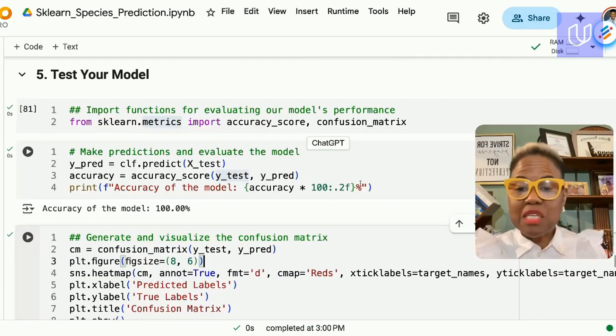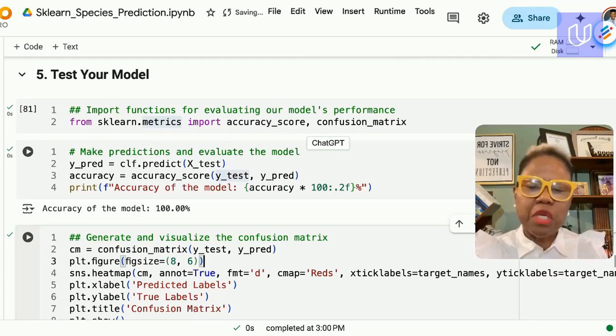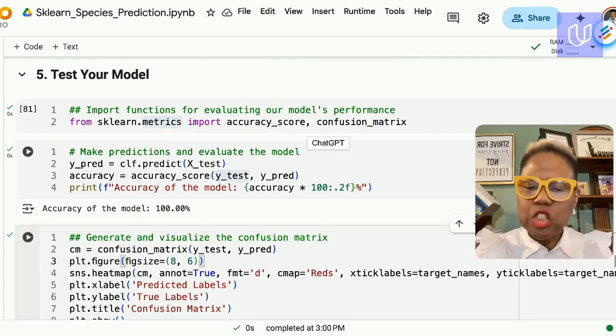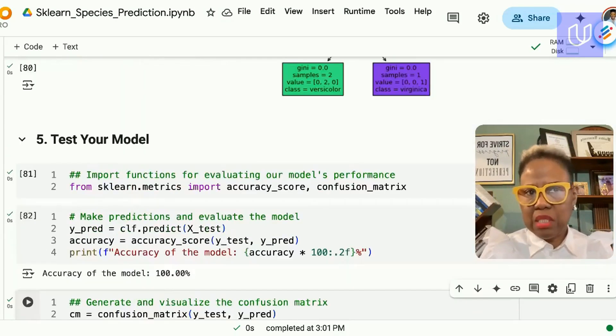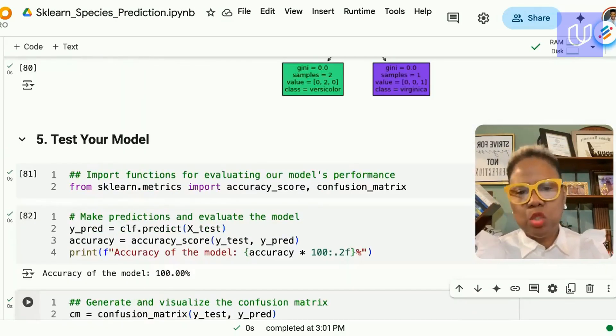So here it says the model is 100% accurate and of course that's expected because this is a very small, very clean, very well curated dataset. The model did an excellent job. All of the predictions matched the actual data so we have 100% accuracy. That is not usually the case in the real world but that's how easy it is to build your model.